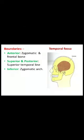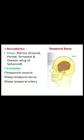Coming to the Temporal Fossa — boundaries: anteriorly, the zygomatic bone and the frontal bone; superiorly and posteriorly, the superior temporal line; inferiorly, the zygomatic arch. The floor is formed by the pterion, which comprises the frontal bone, the antero-inferior angle of the parietal bone, the squamous part of the temporal bone and the greater wing of the sphenoid. The contents are the temporalis muscle, the deep temporal nerve and the deep temporal artery.